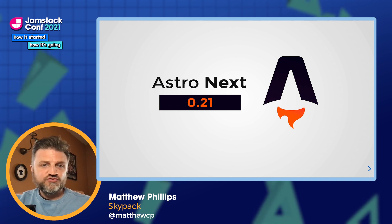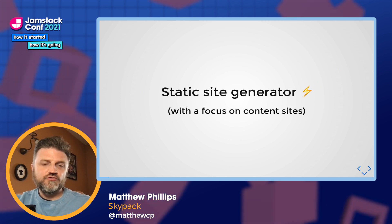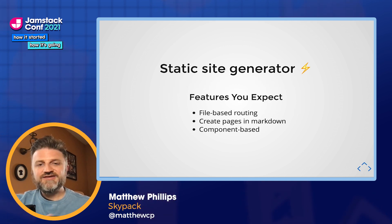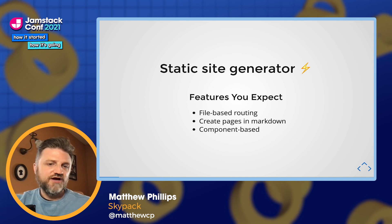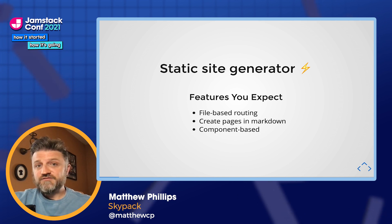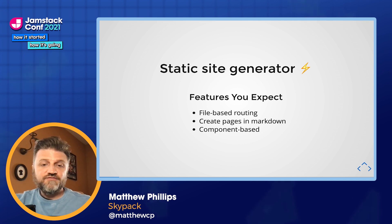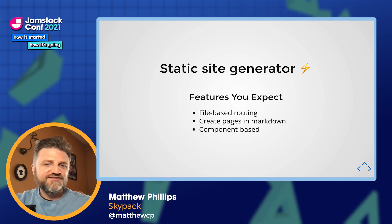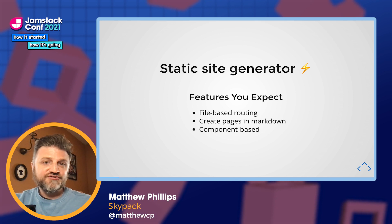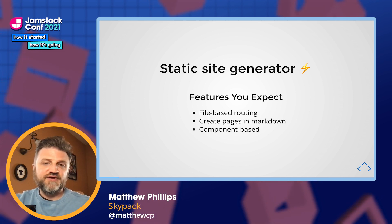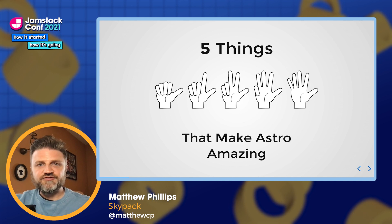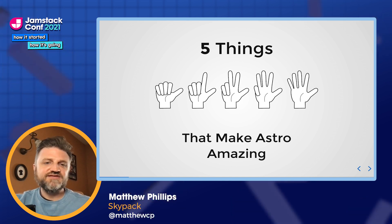That's version 0.21. If you're not already familiar with Astro, it is a static site generator with a focus on content sites. It has a lot of features you already expect, such as file-based routing — the ability to create pages by creating a file on the file system. The page could be a markdown file, for something like a blog post, or it could be a .astro file. Astro is also component-based, meaning you create pages by composing components together. But let's talk about five things that make Astro unique.